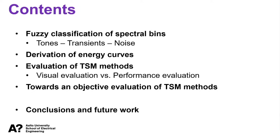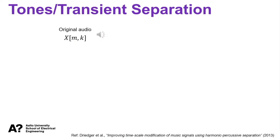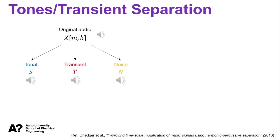An effective timescale modification algorithm should preserve the quality of tonal, transient, and noise components after timescaling. As an audio example, here is a castanet over a violin, its tonal part, its transient part, and its noise component.